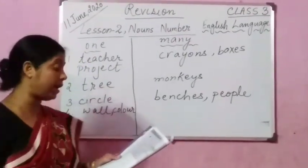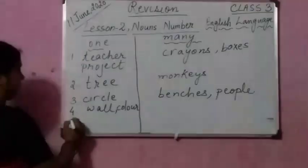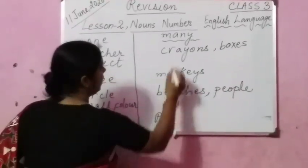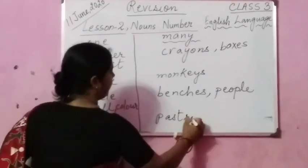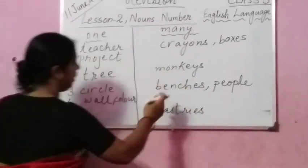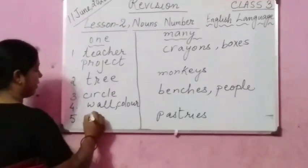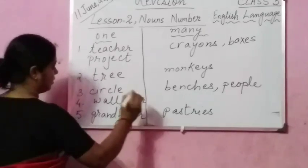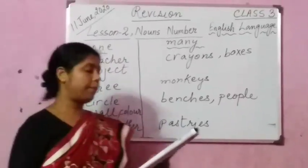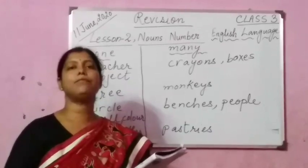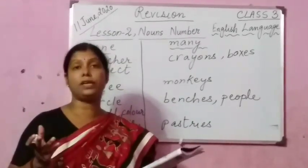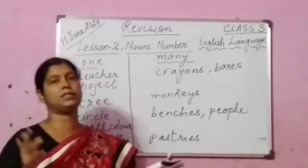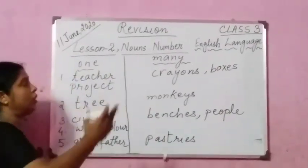Number 5: the pastries were made by my grandfather. Here we write pastries under the many category — pastries are many. And grandfather is one. Who made the pastries? My grandfather. Grandfather is singular but pastries are plural. Just go through all these ones, children.